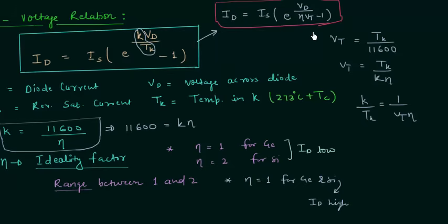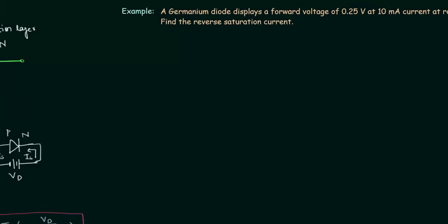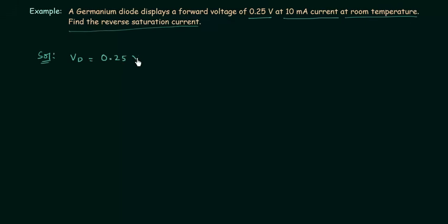Let's solve one problem based on this formula. In this problem we have to find the reverse saturation current. A germanium diode displays a forward voltage of 0.25 volts at 10 mA current at room temperature. Find the reverse saturation current. So we have Vd, the voltage across the diode, equal to 0.25 volts, and the diode current Id equal to 10 mA.